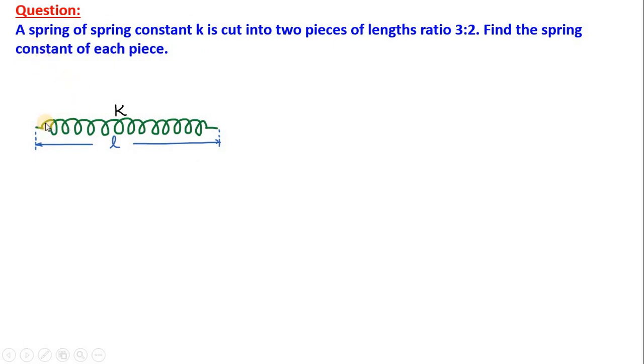Let us understand this with the help of a question. A spring of spring constant K is cut into two pieces of length ratio 3 is to 2, not equal, but 3 is to 2. Find the spring constant of each piece.